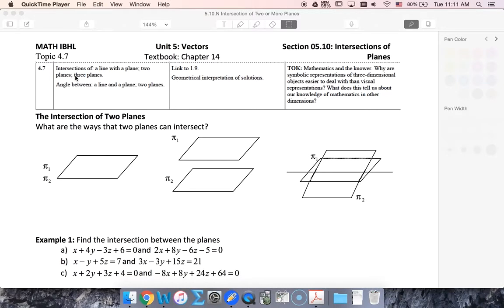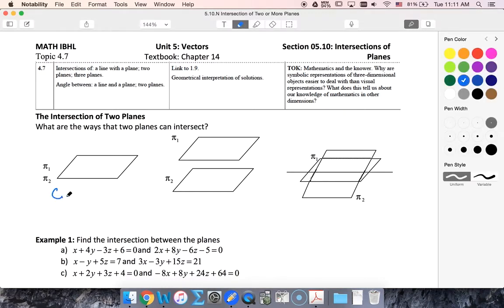All right students, in this video I'm going to talk about intersections of two planes. First of all, if we think about two planes and the way they can intersect, well those two planes can be on top of each other, so they would be coincident and they would intersect infinitely many times.